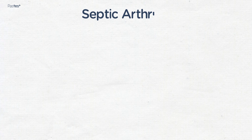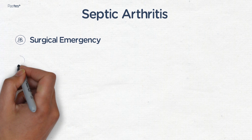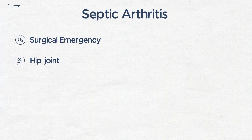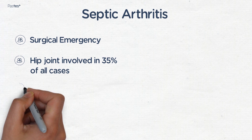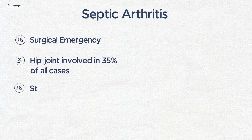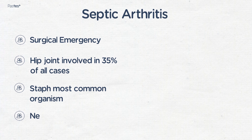This is because you are always concerned as to whether this limp is septic arthritis. Septic arthritis is a surgical emergency, and 35% of cases involve the hip joint. Staphylococcus is the most common organism, though there are others, and this needs urgent investigation and treatment.